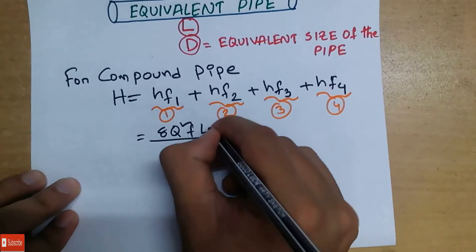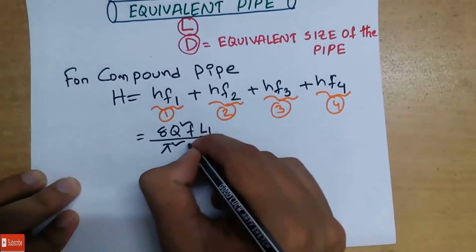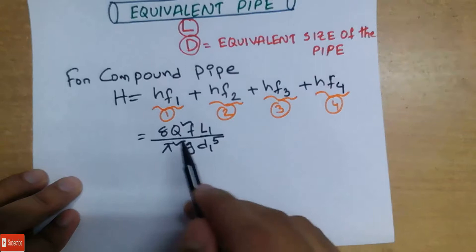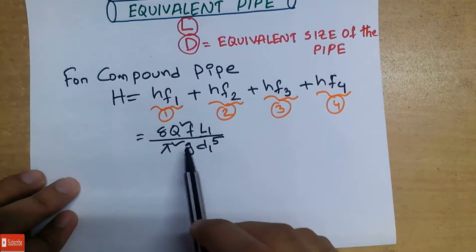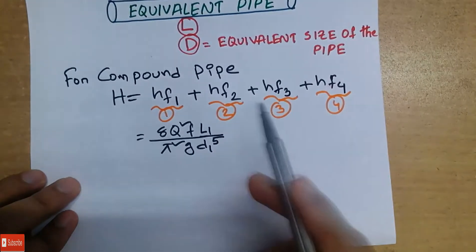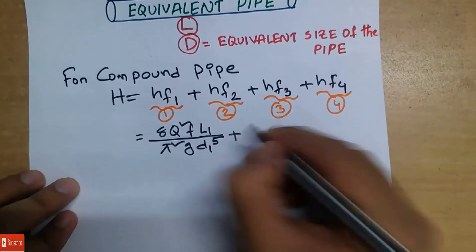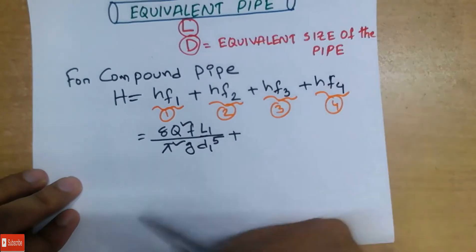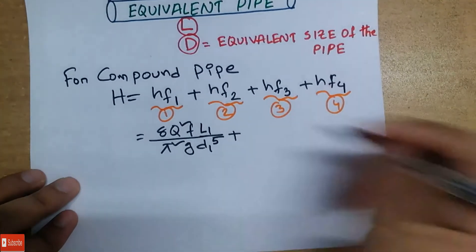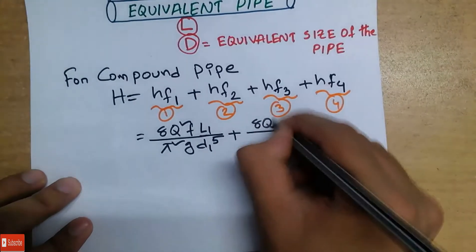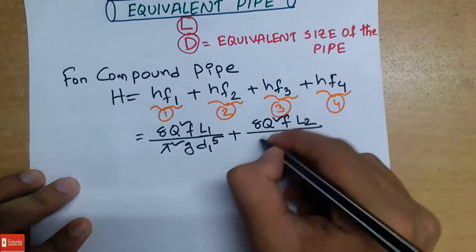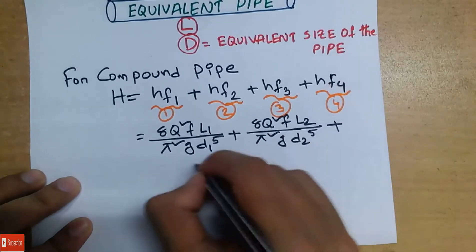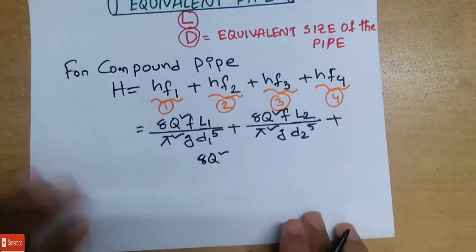So we have a total head loss: HF1, HF2, HF3, HF4. Then we have the total head loss expression involving 8Q squared.